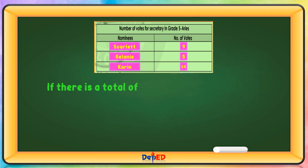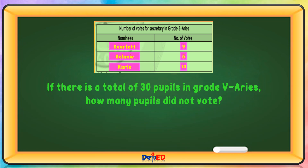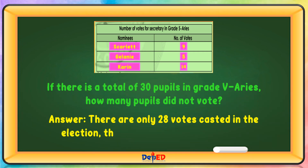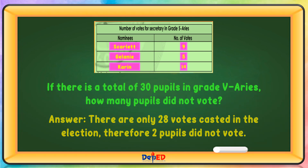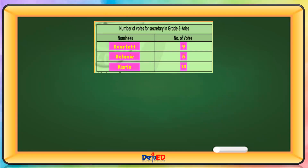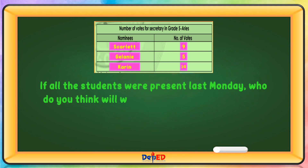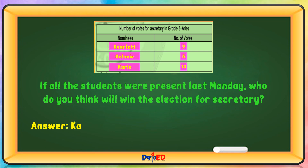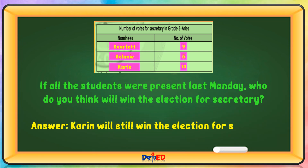If there is a total of 30 pupils in Grade 5, how many pupils did not vote? There are only 28 votes cast in the election, therefore two pupils did not vote. If all the students were present last Monday, who do you think will win the election for Secretary? Karin will still win the election for Secretary.